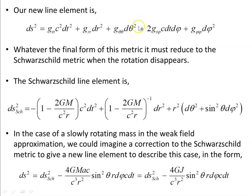Our new line element becomes: g₀₀ c² dt², g₁₁ dr², g₂₂ dθ², the cross term g₀₃, and g₃₃. Whatever the final form of the metric, it must reduce to the Schwarzschild metric when the rotation disappears — if the rotating mass stops rotating, the cross term must disappear and the whole expression must reduce to the Schwarzschild line element.